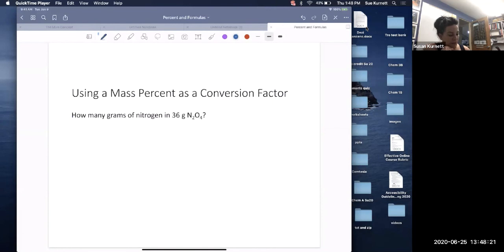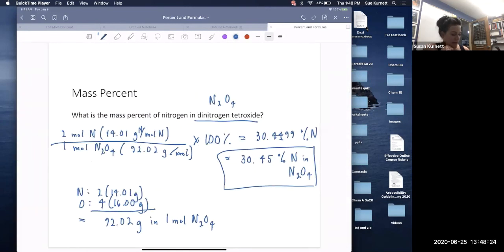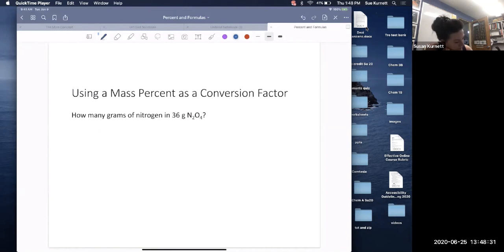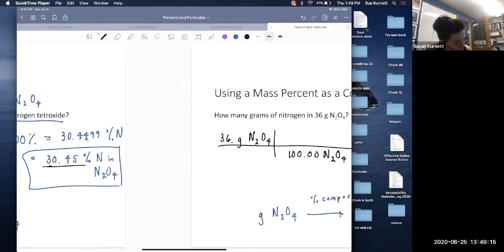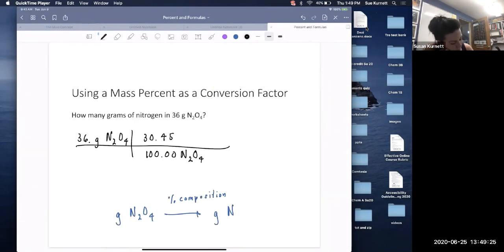Now we can use that as a conversion factor. How many grams of nitrogen in 36 grams of that same compound? So our conversion factor is percent composition that we just saw on the previous page. And a percent is per hundred. So in 100 grams of the everything N2O4 dinitrogen tetroxide, 30.45 grams are nitrogen.